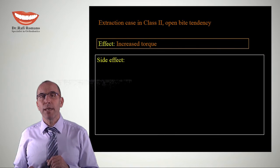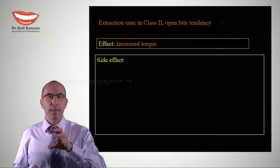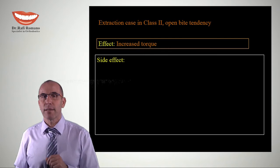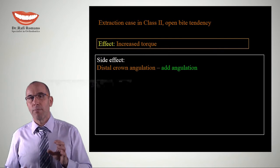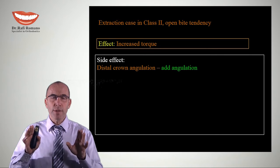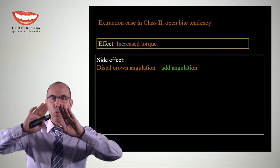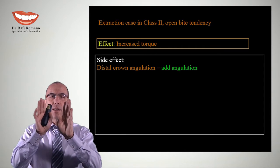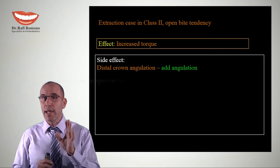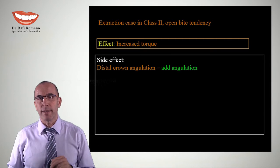Let's see what happens when we increase torque in a specific case. The first effect is crown angulation. According to Andrew's six keys of occlusion, when we add torque we get a wagon wheel effect, meaning the roots converge. We can add angulation in the laboratory or adjust bracket position to correct this.